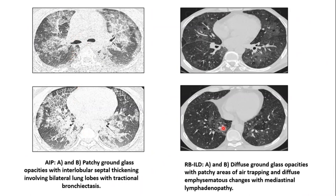The next is respiratory bronchiolitis-associated interstitial lung disease. This disease is mainly associated with smokers, and it is characterized by macrophage accumulation within the bronchiolar and alveolar wall. On HRCT, we can see ground glass opacity and centrilobular nodules. In advanced cases, we can also see fibrotic changes. Other changes related to smoking such as bronchial wall thickening and centrilobular nodules can be seen. In this set of images, we can see the presence of diffuse ground glass opacity with patchy areas of air trapping and diffuse emphysematous changes, with mediastinal lymphadenopathy. This is the case of respiratory bronchiolitis-associated ILD.